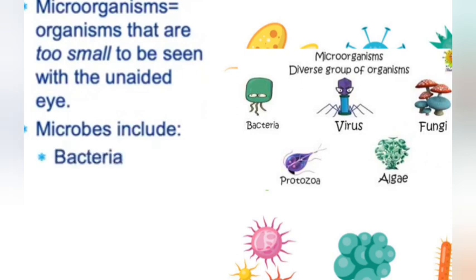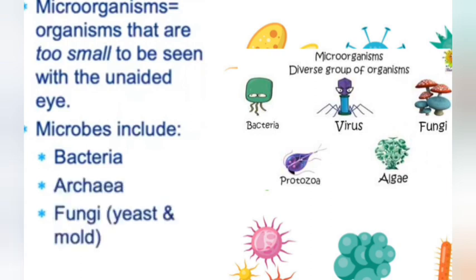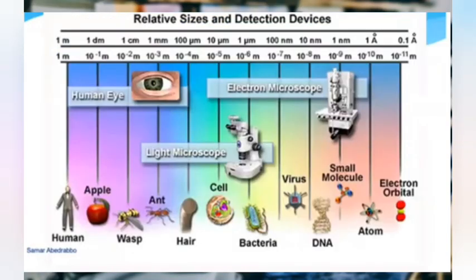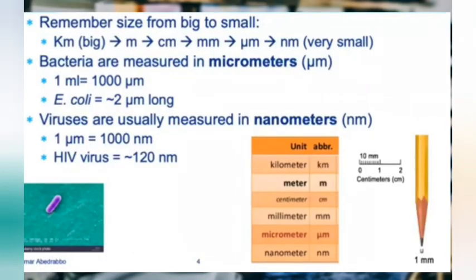Microbes or tiny organisms include bacteria, archaea, fungi, protozoa, and microscopic algae, among many different things. These are microorganisms — they're very small and you need a microscope to see them. For example, there's a ton of bacteria on my phone, but I can't see them because they're so small.